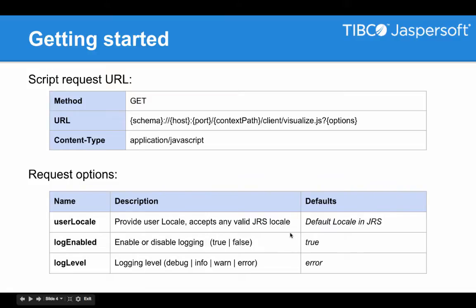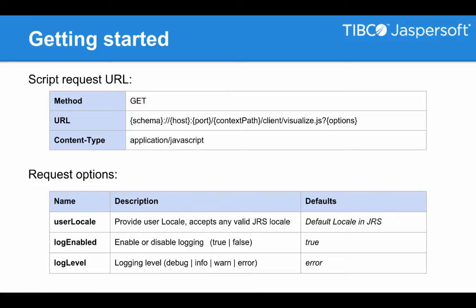Some of those parameters are, of course, the user locale, which will accept any Jasper Report Server locale. So if you have reports that are using internationalization, you can just specify the locale in the initial call and all the reports will actually be rendered in that particular locale. The other two options are regarding logging — whether you want to enable or disable logging and what log level you're going to use. The logs are written in the JavaScript console log of your application. It's a best practice to turn off logging when you're moving your application into production so you're not writing things to the JavaScript console running at the client side.